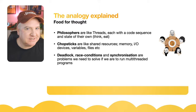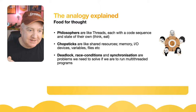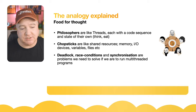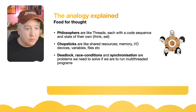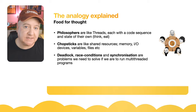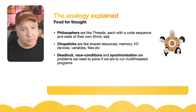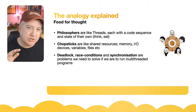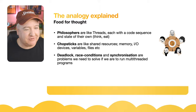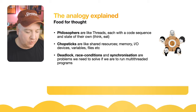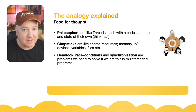Stepping back from this problem: the philosophers in our analogy are like threads on a computer - each has its own code sequence and state, either thinking or eating, either processing or waiting for a resource. Chopsticks are like shared resources such as memory, IO devices, variables, files - anything that could be used by another process on the same computer. Deadlock, race conditions, and synchronization are all problems we need to solve for multi-threading to work properly.